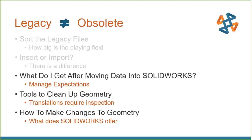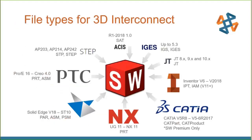What do you get after moving data into SOLIDWORKS? For 3D Interconnect, the supported formats include ACIS, IGES, JT, Inventor, CATIA V5, NX, Solid Edge, ProE, and STEP — along with their associated versions. The only one to point out is CATIA V5, which requires SOLIDWORKS Premium; all the rest come with SOLIDWORKS Standard.